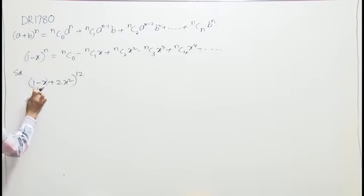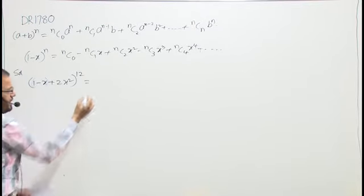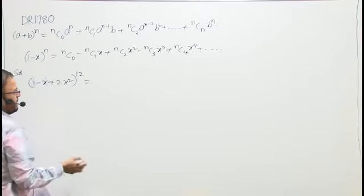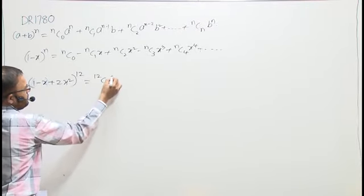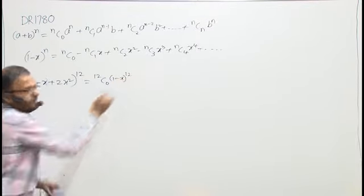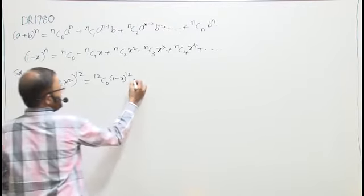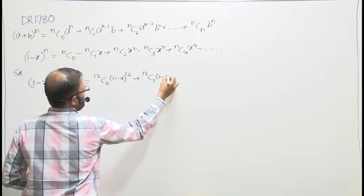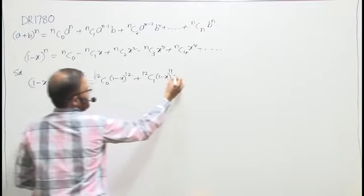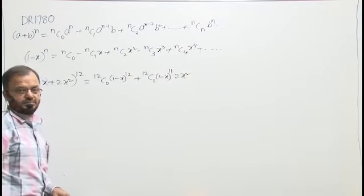Comparing with the formula, my a is (1 - x) and my b is 2x². Expanding, I write: 12C0 · (1-x)^12 as the first term, then 12C1 · (1-x)^11 · 2x² as the second term.